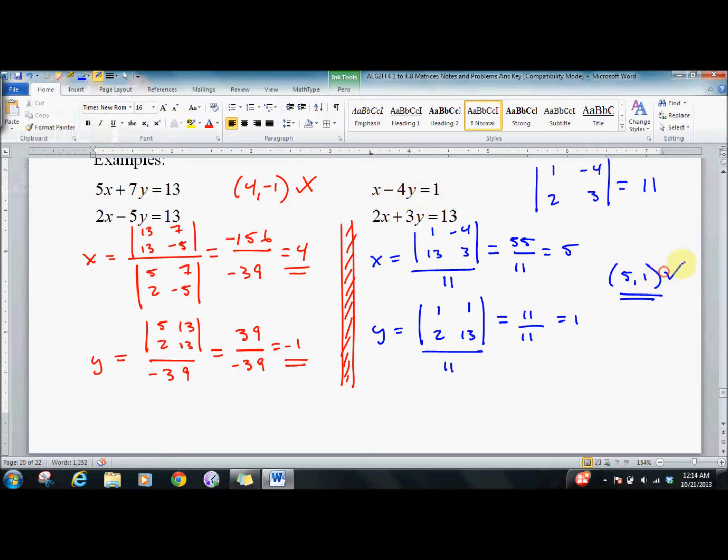Checking: 5 minus 4 is 1, check. 10 plus 3 is 13, check. Cramer's rule also works with a 3 by 3, but that's beyond the scope of this course. We're just gonna stick with our 2 by 2 for the time being. That's it, good luck.